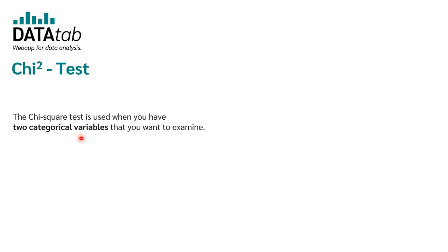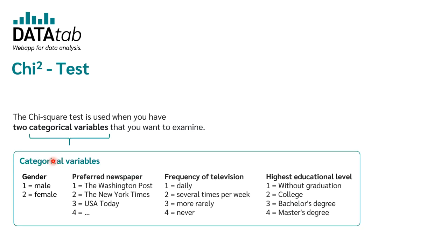When do we use the chi-square test? The chi-square test is used when you want to investigate if there is a relationship between two categorical variables. What is a categorical variable? Categorical variables are, for example, gender, the preferred newspaper, frequency of television, or the highest educational level. If we want to investigate the relationship between two categorical variables, we need the chi-square test.